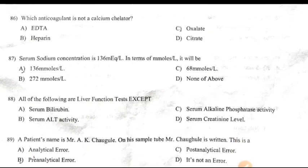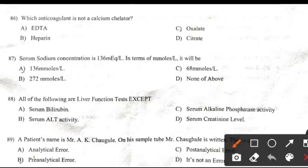Which anticoagulant is not a calcium chelator? Right answer is C: Oxalate.